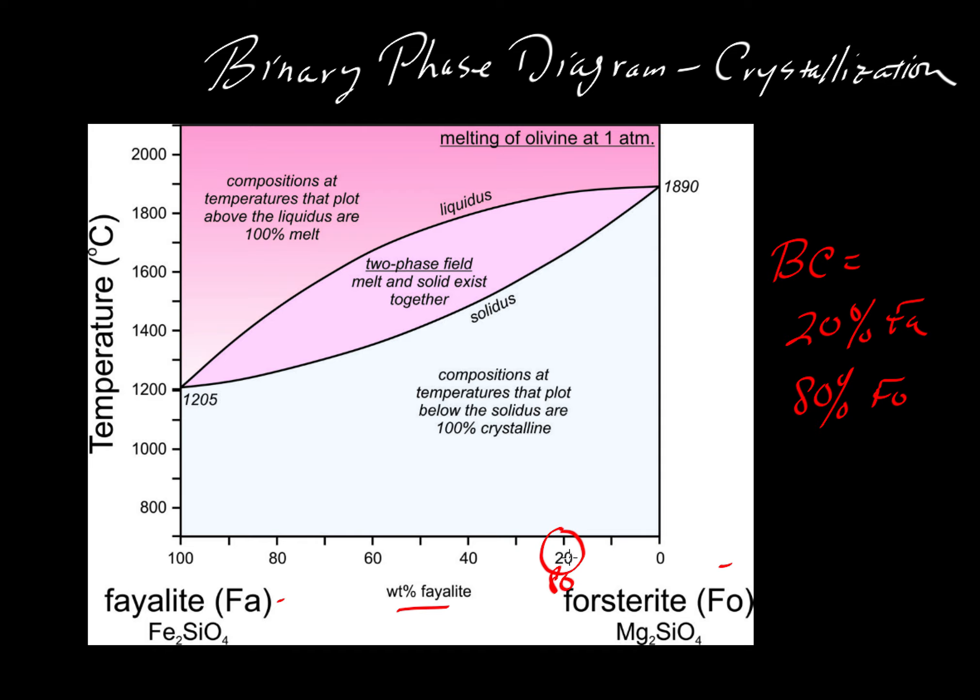Now if we have a system that is so hot that it starts out completely as liquid, well let's see if we can draw a nearly vertical line and that means we'll have a liquid that's way up here. Let's start at about 1890 - 1890 would still be completely liquid.